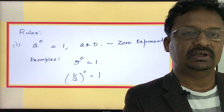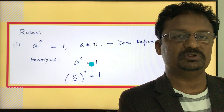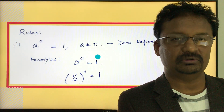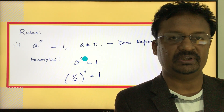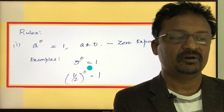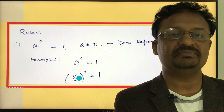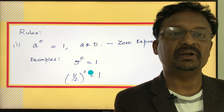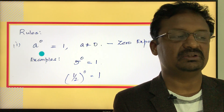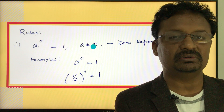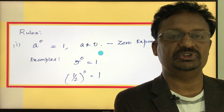Rule number one: zero exponent. a to the power of zero equals one, where a is not equal to zero. This is called the zero exponent rule. Any number to the power of zero is always one. For example, 5 to the power of zero equals one. Another example: one-half to the power of zero is also one. Don't ask about zero to the power of zero — that is undefined. The base number must be a non-zero number.